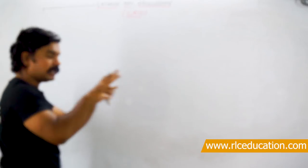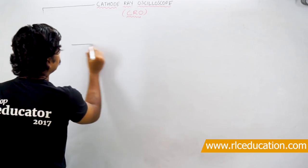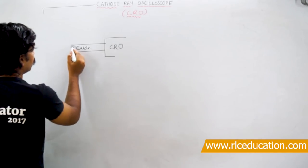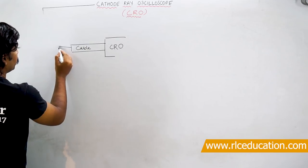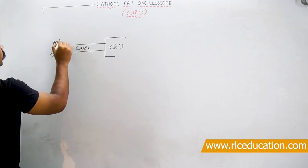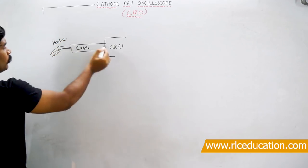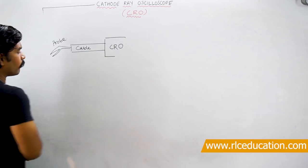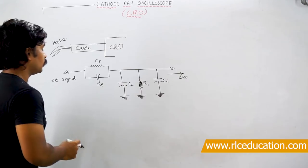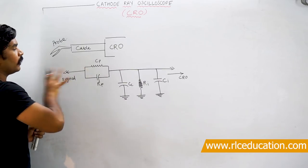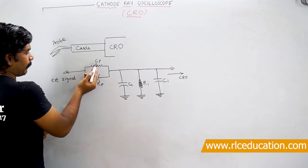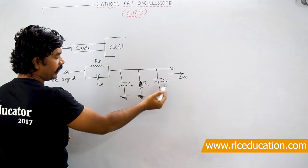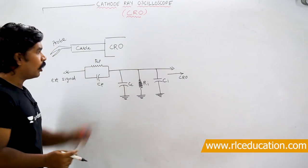On the output side of the CRO where you connect the signal, you will have a cable with a probe - an alligator clip type connection. The electrical equivalent circuit of the probe-cable-CRO input consists of probe resistance Rp and probe capacitance Cp connected in parallel, along with the CRO's input capacitance CI and input resistance RI also in parallel.